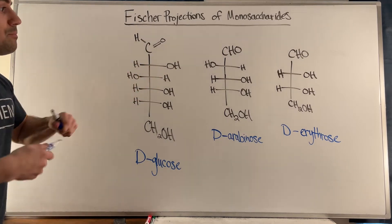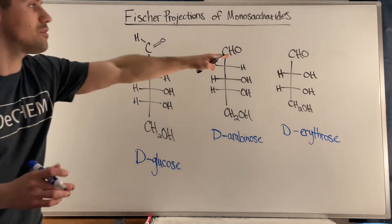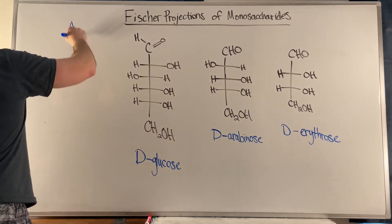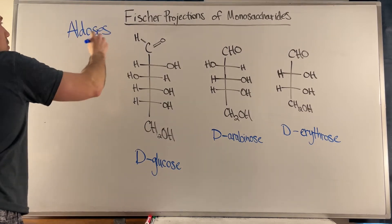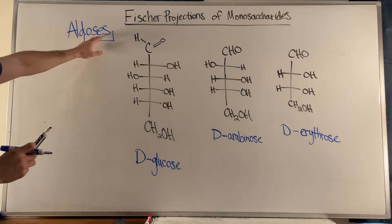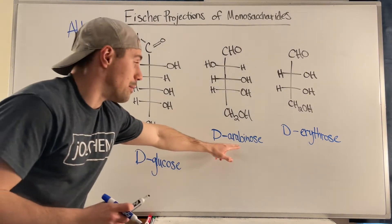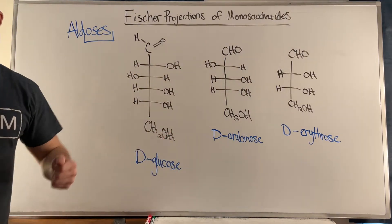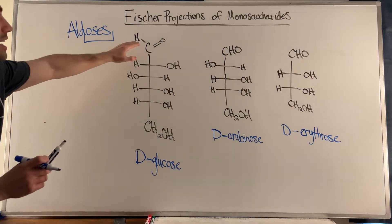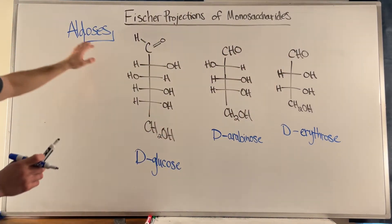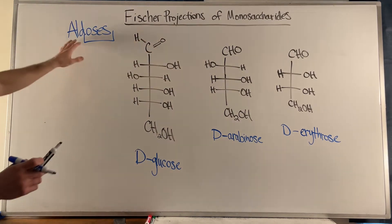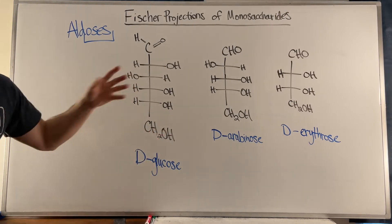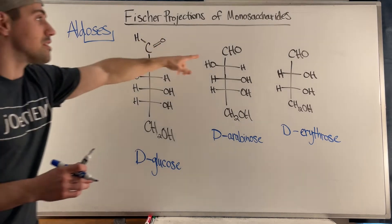When you have a Fischer projection in this form, all three of these sugars have varying amounts of carbons in them, but we can refer to these as aldoses. A carbohydrate will always have an OSE ending — glucose, arabinose, erythrose. The OSE ending tells you you're dealing with a carbohydrate. Because there is an aldehyde at the top of the sugar, that's why we refer to these generically as aldoses.